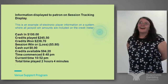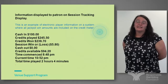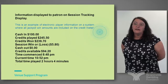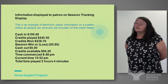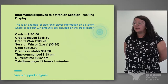This is an example where any jackpot wins are included in the credit meter. Not all manufacturers use the same formula. There are other ones where there will be a small asterisk next to the credits available, and that will indicate they've won a jackpot but it's not included in this meter.